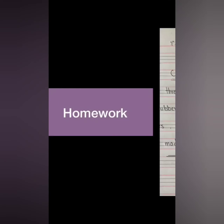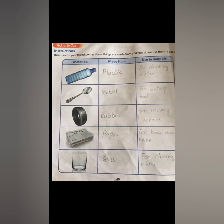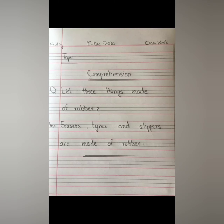Today we have learned about rubber. Your homework is to write in your notebook: list three things made up of rubber. For example: erasers, tires, and slippers are made of rubber — but it is your own choice if you want to write other things. Also, complete Activity 7A on page number 40 in your book, and do that question in your notebook as well.